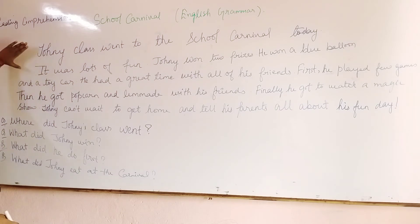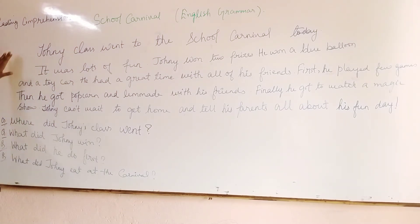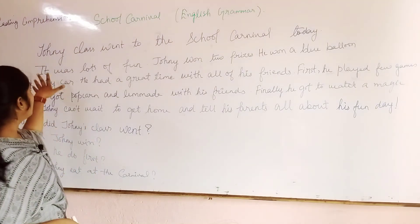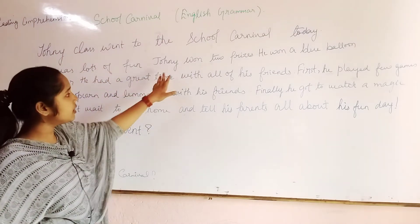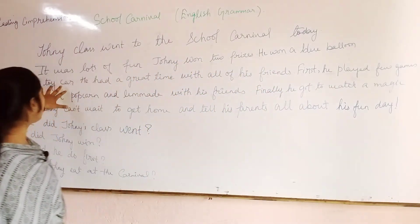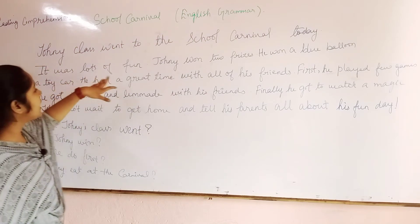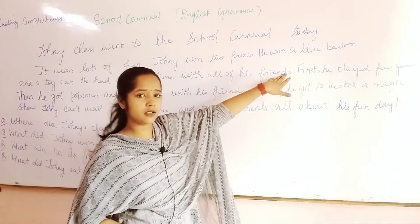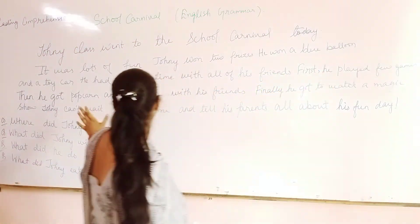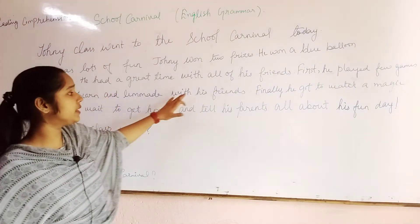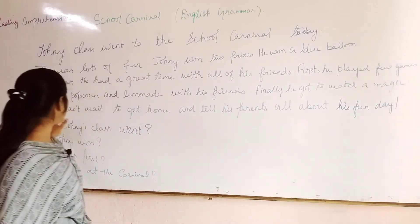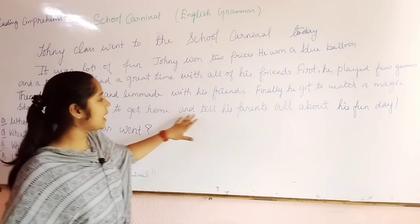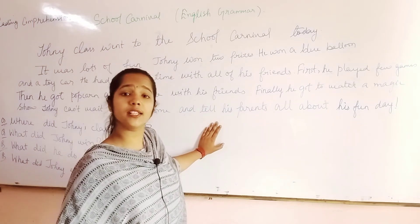So this is the comprehension part — this is the story part. Let me read it again for you. Johnny's class went to the school carnival. It was lots of fun. Johnny won two prizes. He won a blue balloon and a toy ball. He had a great time with all his friends. First, he played a few games, and then he got popcorn and lemonade with his friends. Finally, he got to watch a magic show. He can't wait to get home and tell his parents all about his fun day.